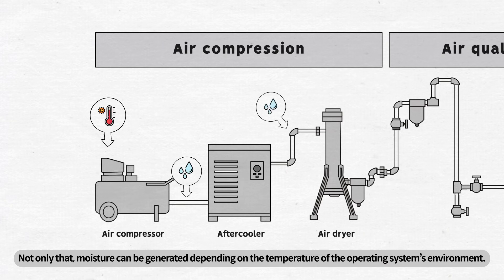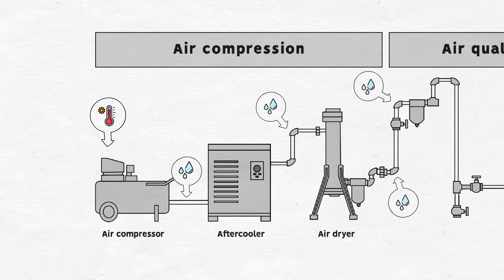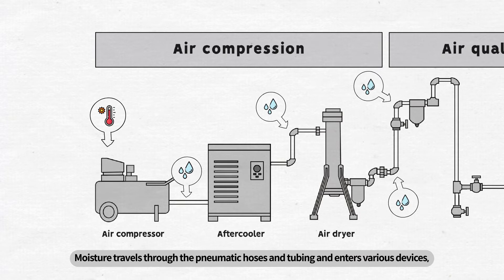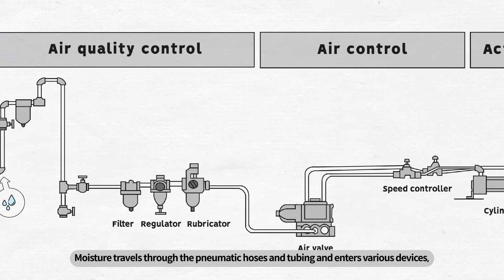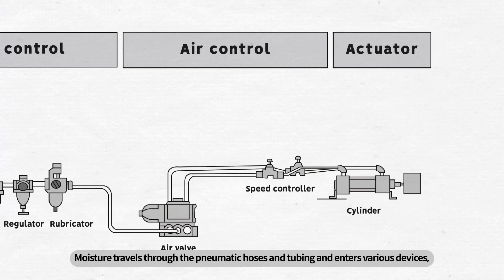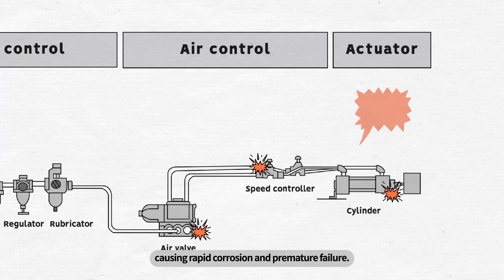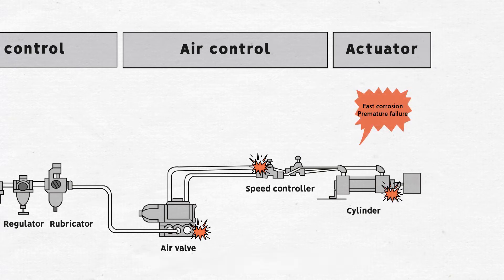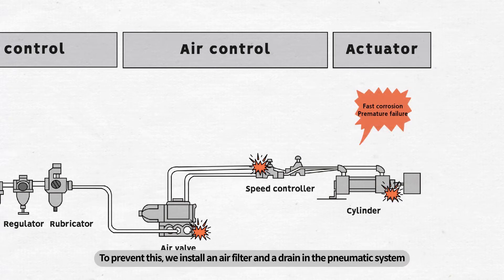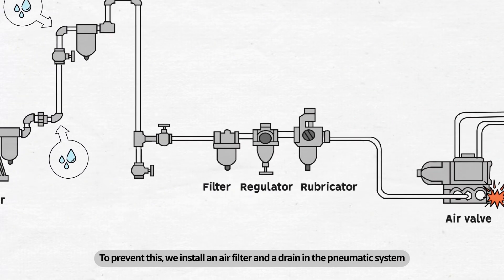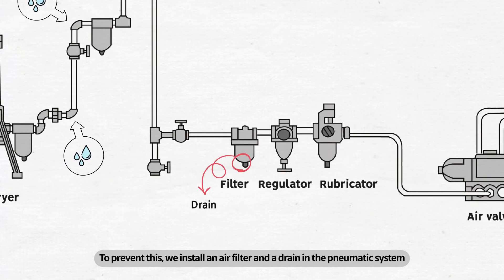Moisture can also be generated depending on the temperature of the operating system's environment. Moisture travels through the pneumatic hoses and tubing and enters various devices, causing rapid corrosion and premature failure. To prevent this, we install an air filter and drain in the pneumatic system to filter and discharge moisture or any other foreign substances.